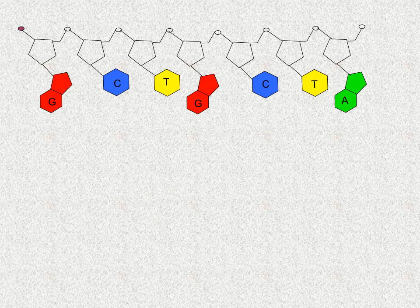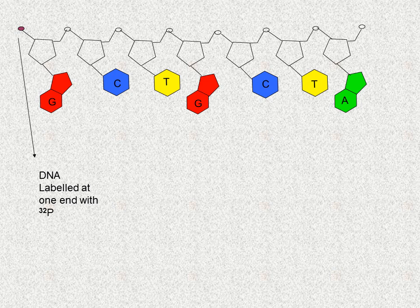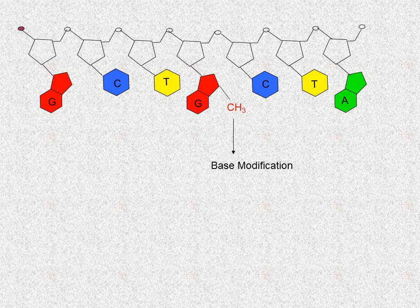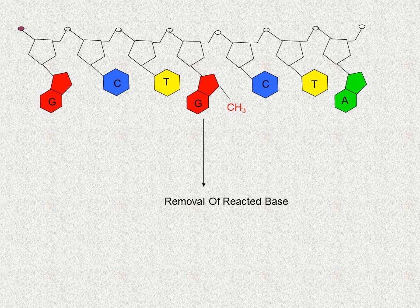Let's look more closely at the chain cleavage reaction at the purine-based guanine as an example. This reaction, specific for guanines, begins with an end-labeled DNA fragment. The 5' end-label is denoted by a purple dot in this example. We mesylate guanine with a mild dimethyl sulfate treatment that mesylates on average one guanine per DNA strand. Then we treat the mesylated DNA with piperidine, which first removes the methylated base and then breaks the DNA strand at the abasic site.